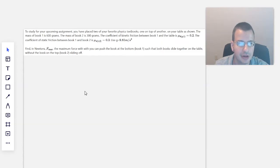To study for your upcoming assignment, you have placed two of your favorite textbooks, one on top of another, on your table as shown. Mass of book 1 is 600 grams. Mass of book 2 is 300 grams.